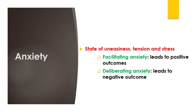One more factor that affects individual learner differences is anxiety. Anxiety is the state of uneasiness, tension, or stress which learners feel as a reaction to an uncomfortable situation. Anxiety can be divided into two main types: facilitating anxiety and debilitating anxiety. Facilitating anxiety is the positive anxiety that motivates the learner to work harder, while debilitating anxiety is negative as it leads to demotivating the learner and eventually frustrating them.